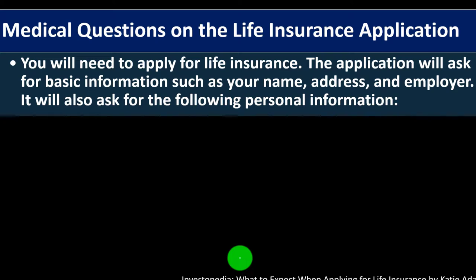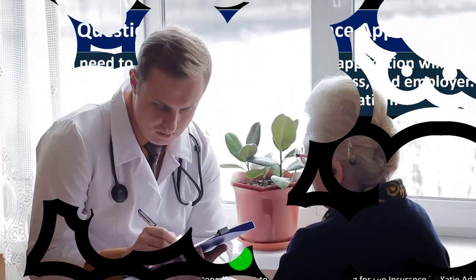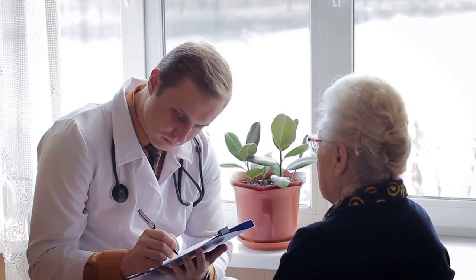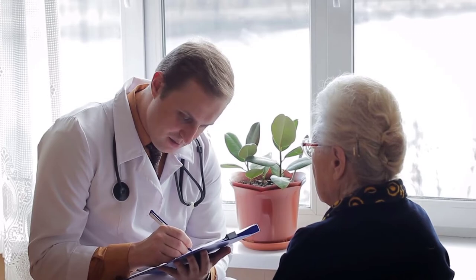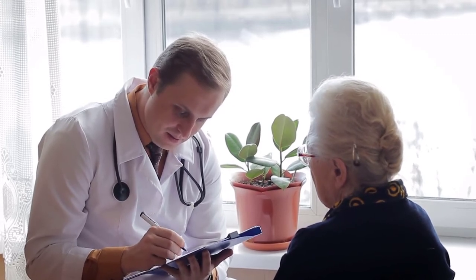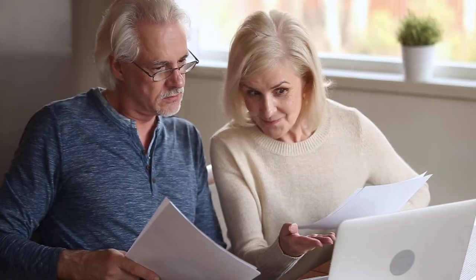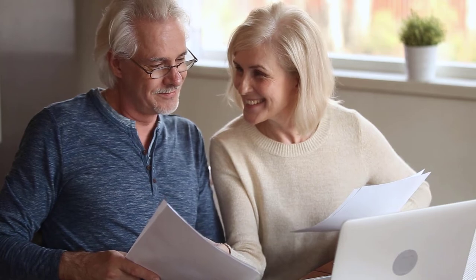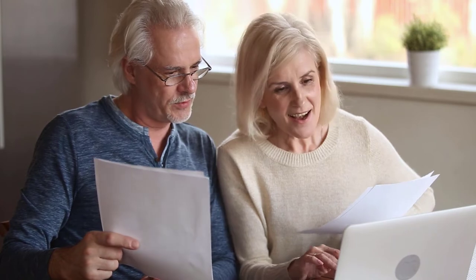Medical questions on the life insurance application. Life insurance is similar to medical insurance with pre-existing conditions. With life insurance, the company wants to know: do you have conditions that might cause you to die soon? For example, giving someone on their deathbed a million-dollar policy wouldn't be a prudent business decision for the insurer. So they want to know some stuff like that.